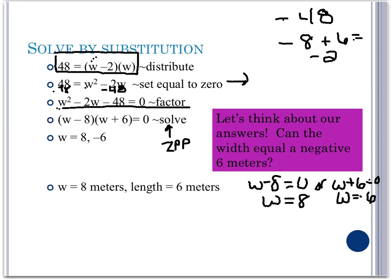Since our width is dealing with a measure of length, we know that it cannot be negative. Therefore, we know our width is 8 meters.